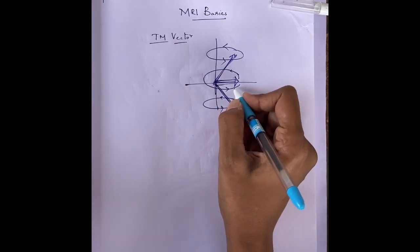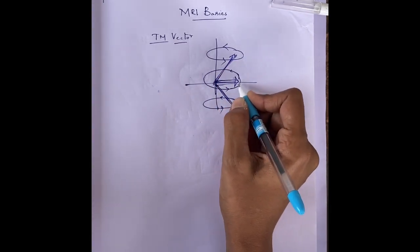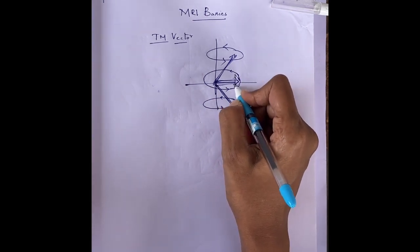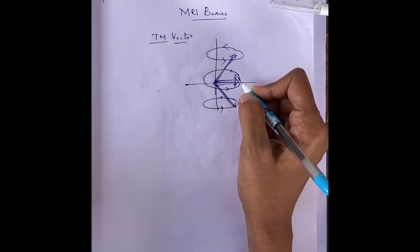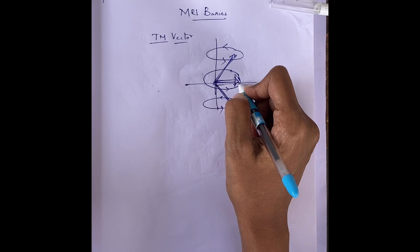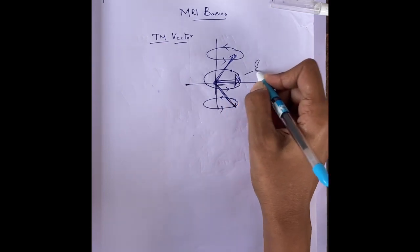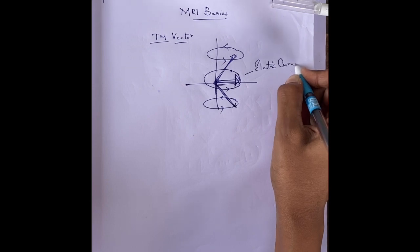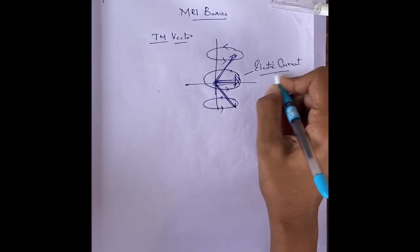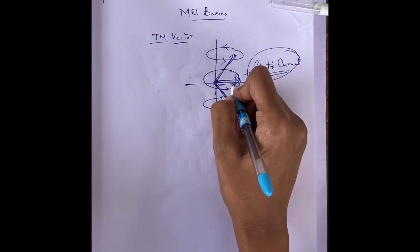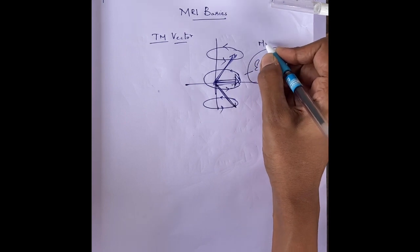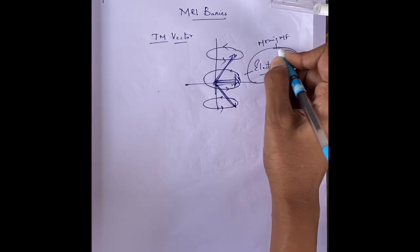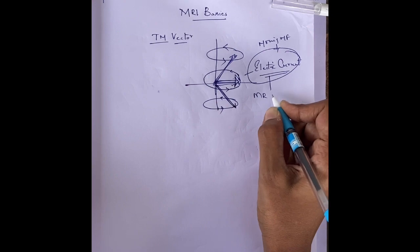This transverse magnetization is a magnetic field that is constantly moving and constantly changing its direction, and it induces an electric current. So this moving magnetic field induces an electric current, and from this we get the MR signal.